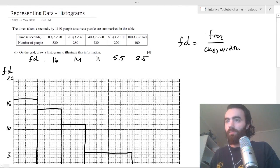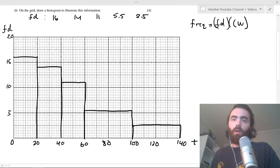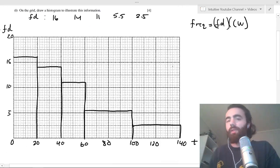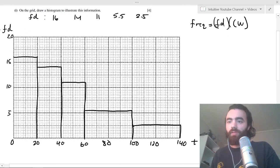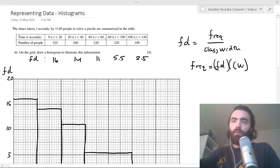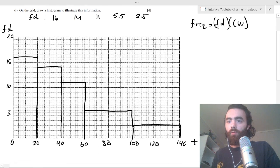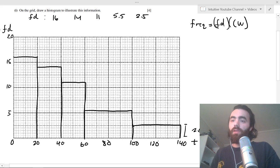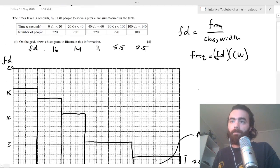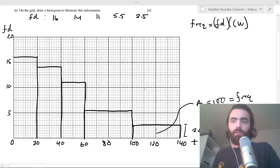And actually, what you'll notice with the frequency density is, well, the frequency, then, is equal to the class width times the frequency density, so this is frequency density times the class width. Well, that is just the area of these bars, just an interesting note, in case you forget it or something. Well, if you look at this bar here, the frequency of people completing the puzzle between 100 and 140 is 100. Well, the area of this bar, because the height here is 2.5, and the length here is 40, well, 40 times 2.5 is 100, so the area of this is 100, which is also the frequency. Just something to note.